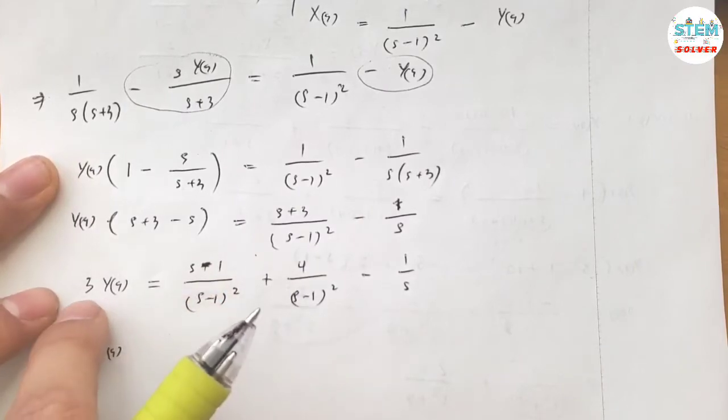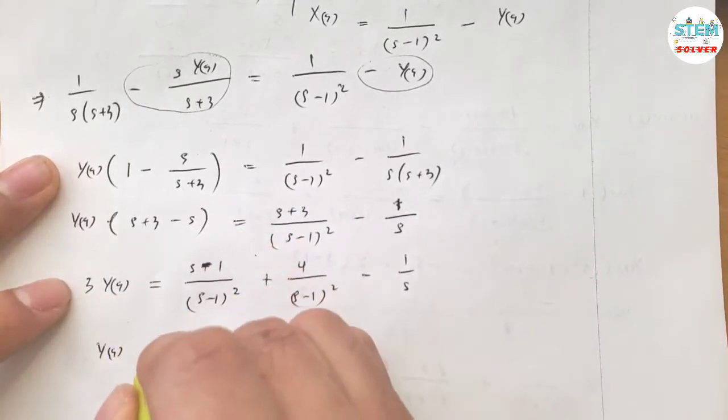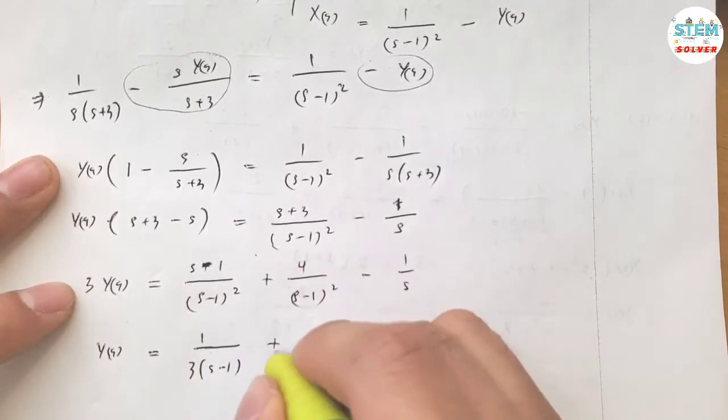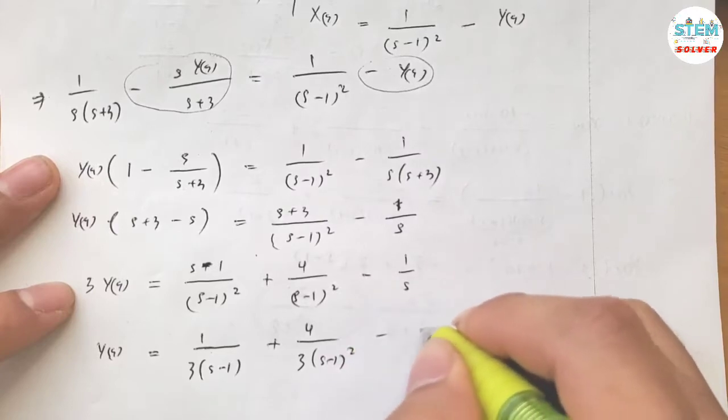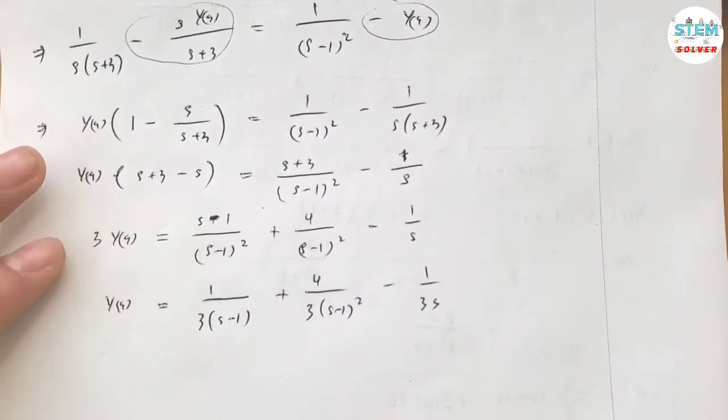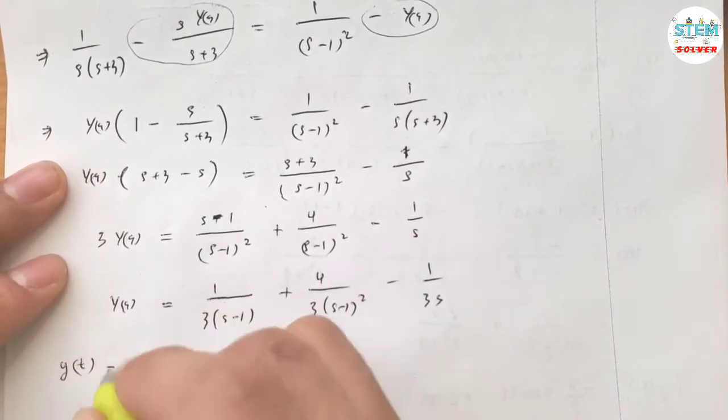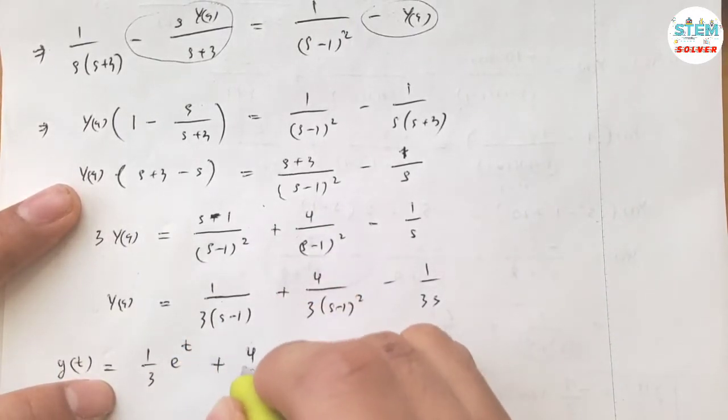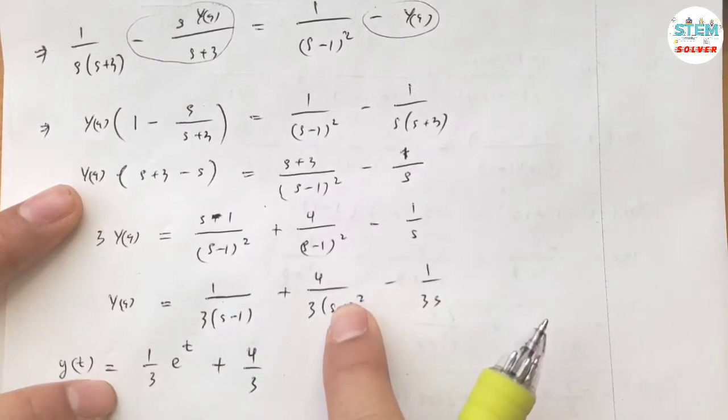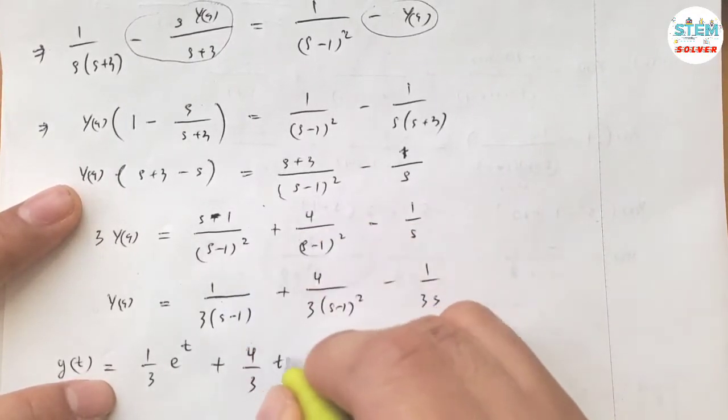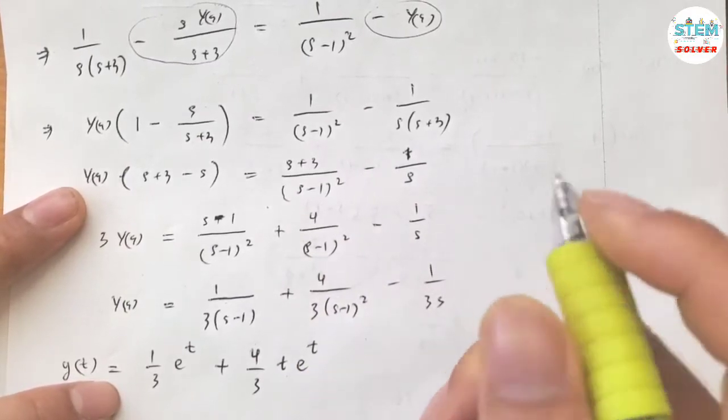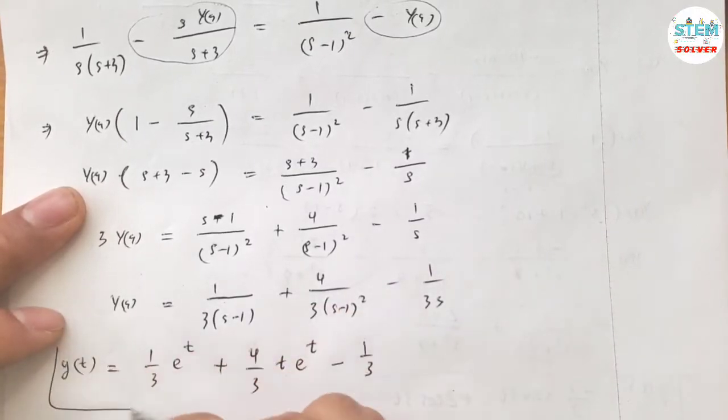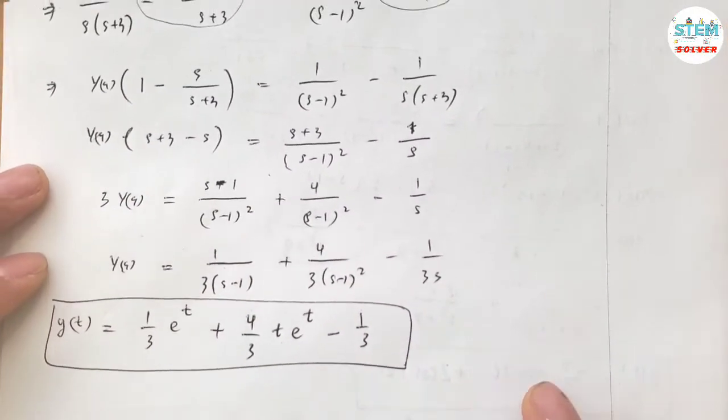Divide both sides by 3. So this over this, I have 1 third S minus 1 plus 4 third S minus 1 squared minus 1 over 3 S. Now apply the inverse on both sides. I have 1 third e to the t plus 4 third. If you ignore this you have S squared, and the inverse of S squared is t. And since you have the shift, you're going to have e to the t similar to this one, minus 1 third. So this is your answer of Y(t).